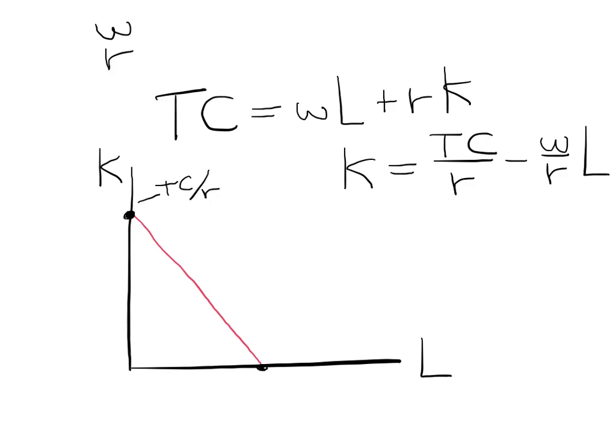Down here is the horizontal intercept, which is TC over W. The slope of this curve is given by the ratio of the prices, so the slope will be W over R.